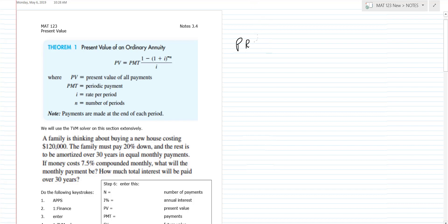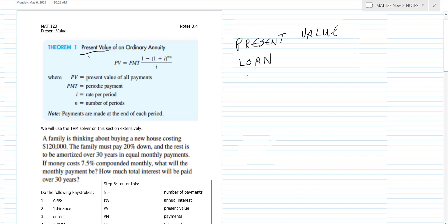This comes in very handy any time you're going to get a car loan or something like that. If I'm going to get a loan for something I'm going to bring my TI with me on the day I sign the papers. We're going to look at what we call the present value of an annuity — think of this as having a loan.